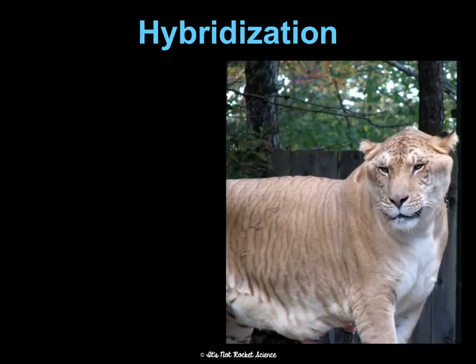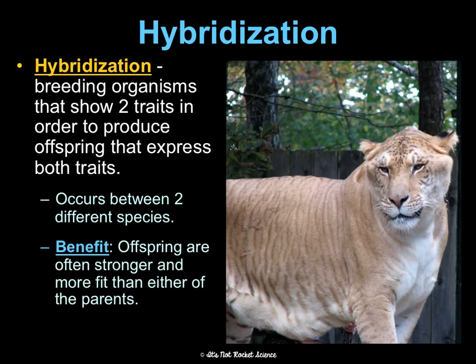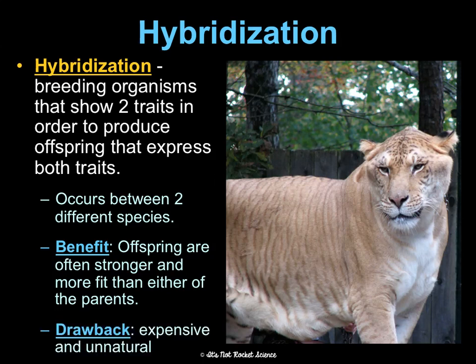Hybridization is when we breed two organisms of different species that each show distinct traits in order to get both traits expressed. For example, a liger — a lion bred with a tiger. The benefit is that offspring tend to be stronger and more fit than either parent. The drawback is it's very expensive and unnatural.